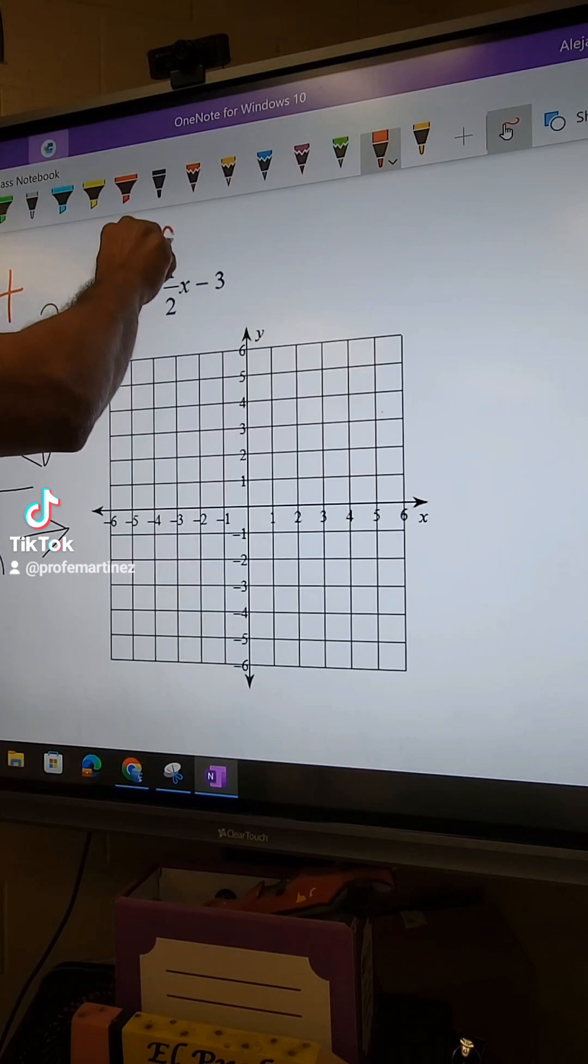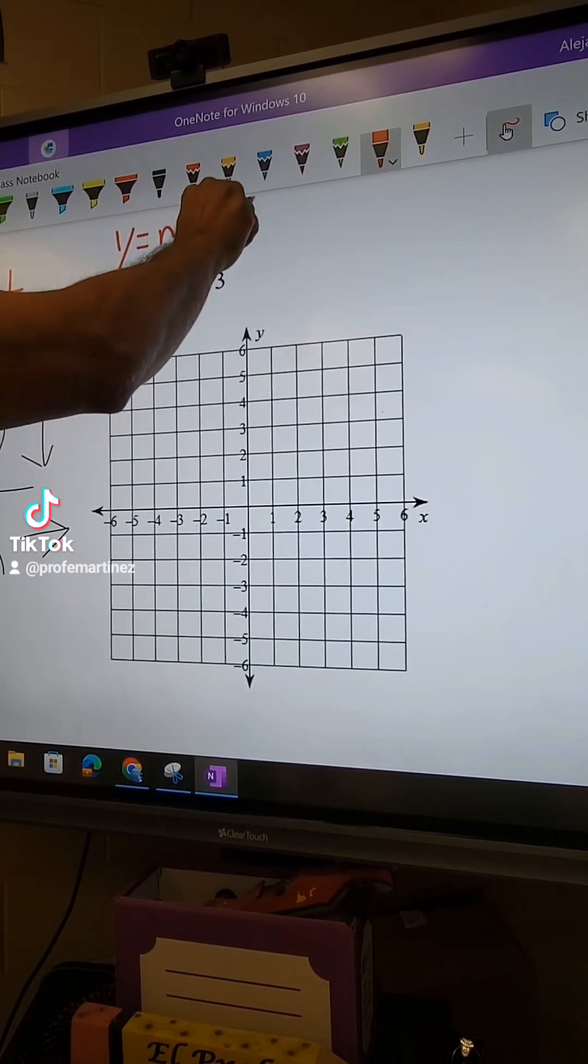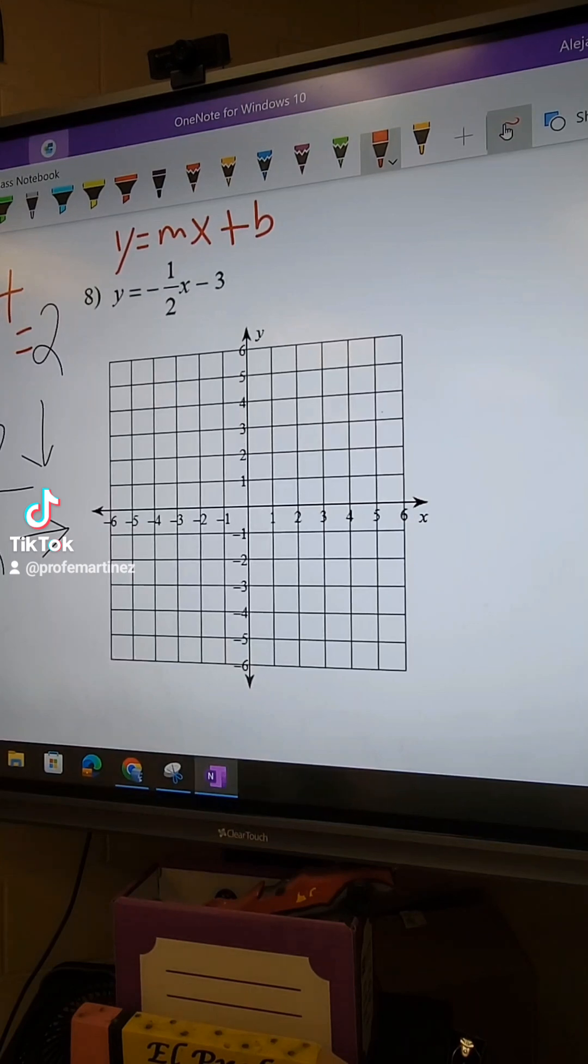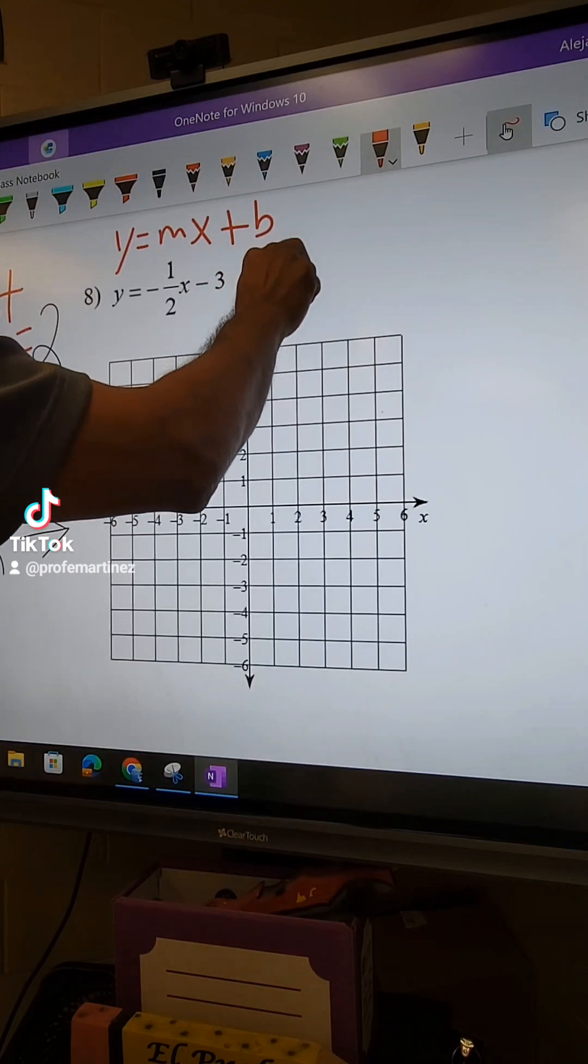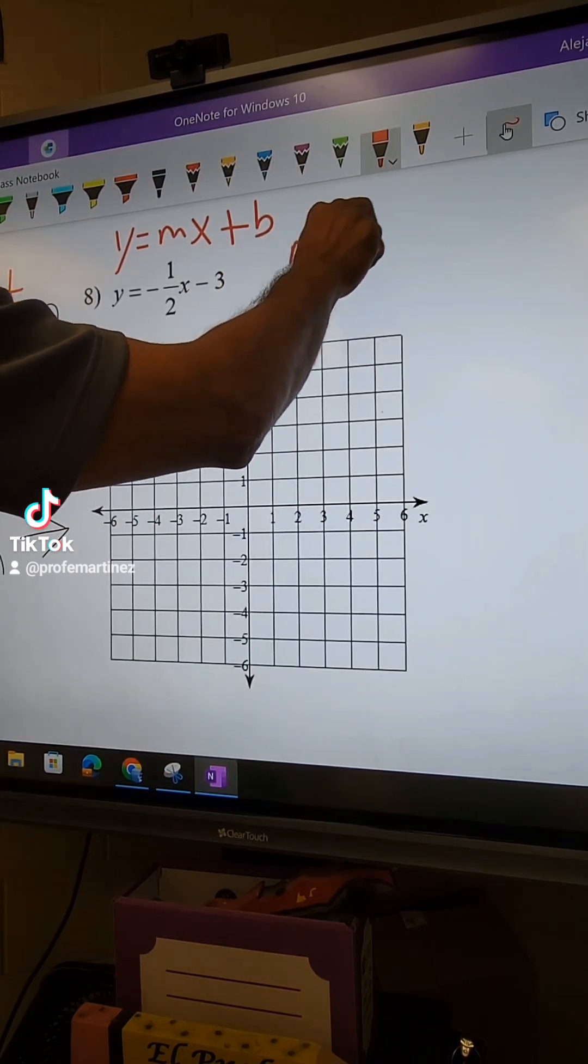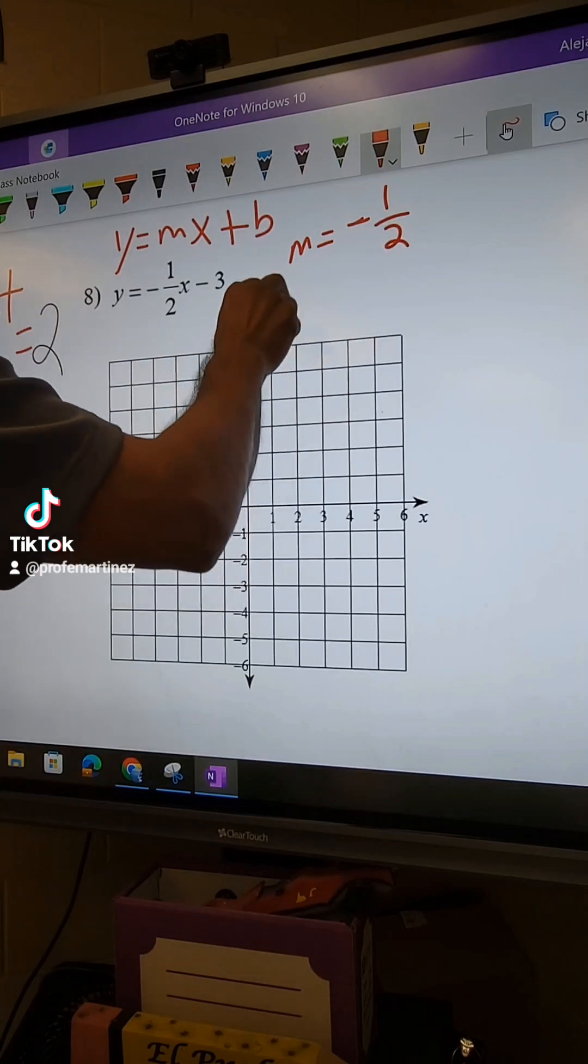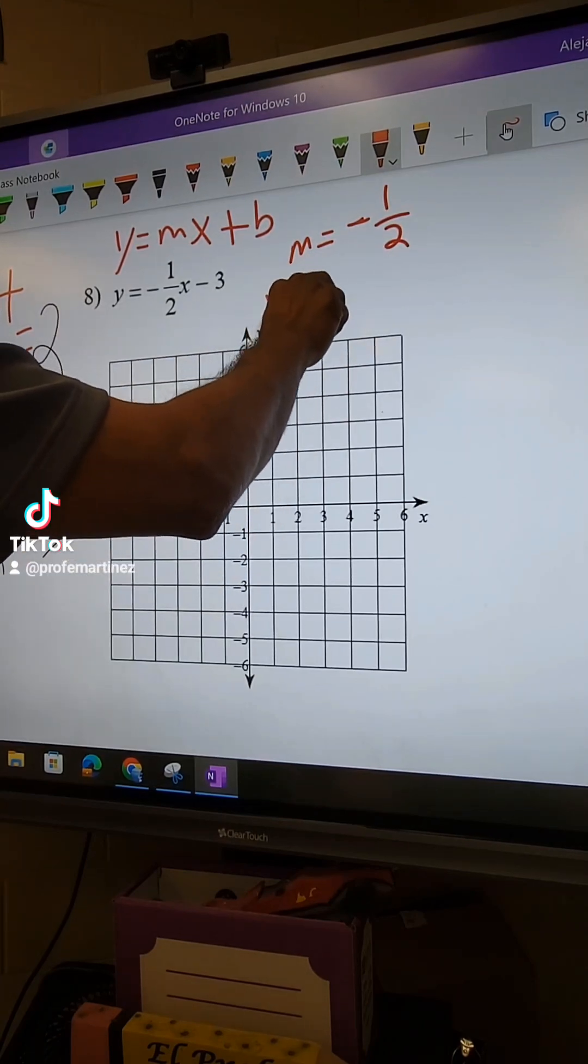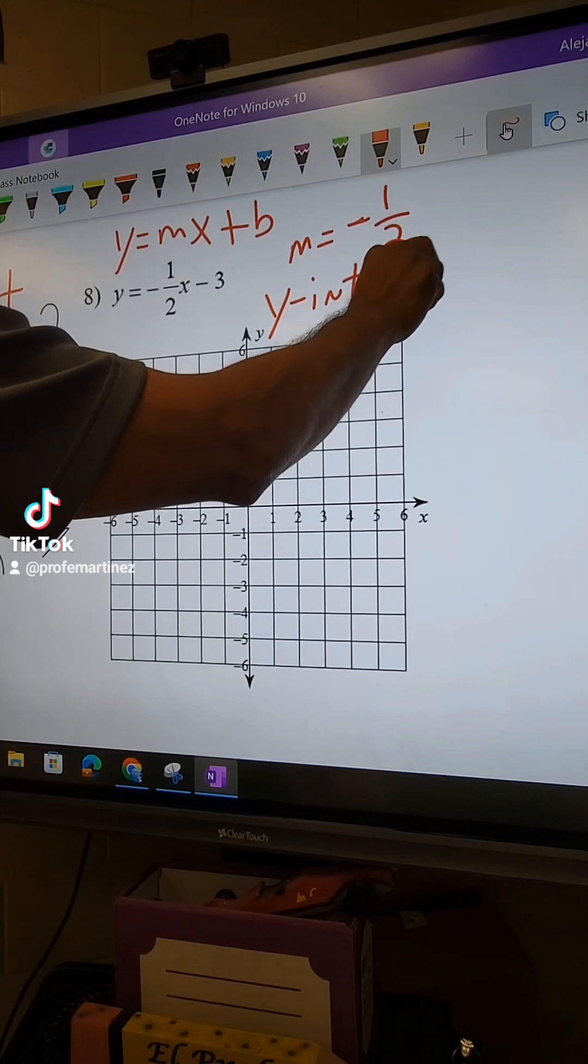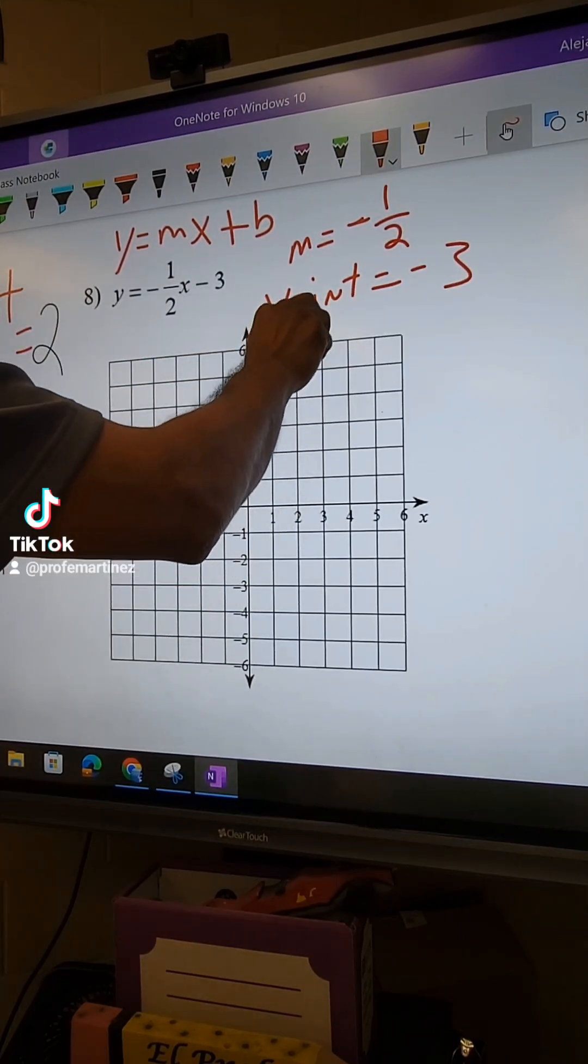Remember the equation y equals mx plus b. So this is your equation, and your m is the one next to the variable. So m is equal to negative 1 half, and your y-intercept is your negative 3, or sometimes we say the b.